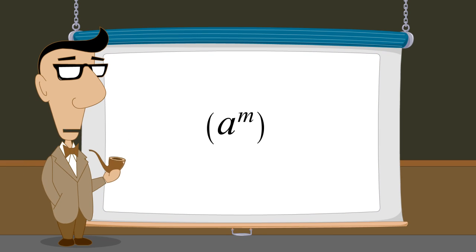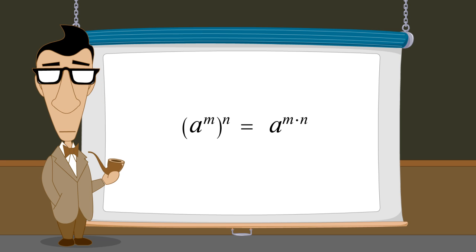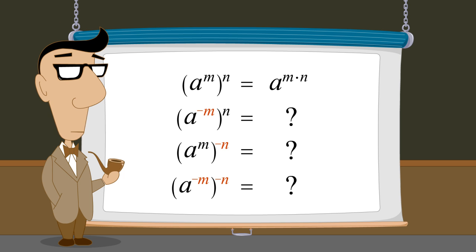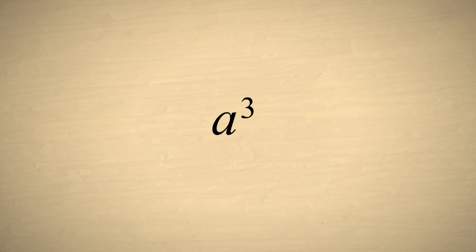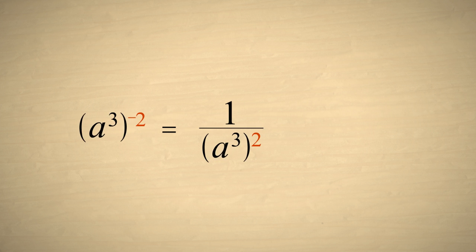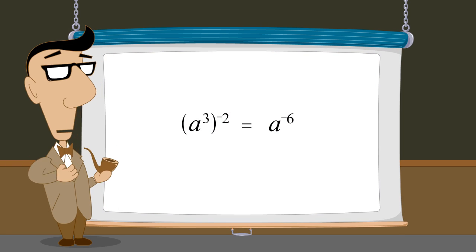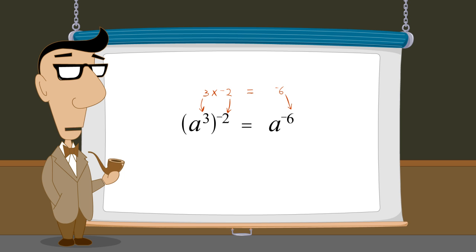So far we have seen that any term with an exponent of m, raised to the nth power, is equivalent to that term with the two exponents multiplied. But what if one or both of the exponents are negative? Let's see what happens when we take a-cubed and raise that expression to the negative second power. Remember that anything with a negative exponent is equivalent to one over that thing with the same positive exponent. So instead of a-cubed to the negative two, let's write one over a-cubed to the positive two. Multiplying the exponents, we get one over a to the sixth power, which is the same as a to the negative sixth power. Since three times negative two is negative six, our rule of multiplying exponents works.